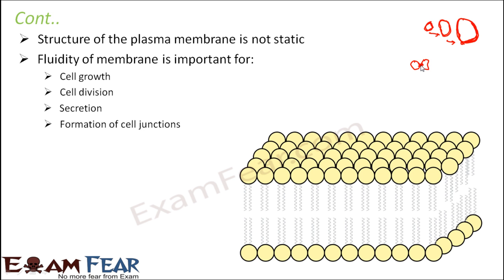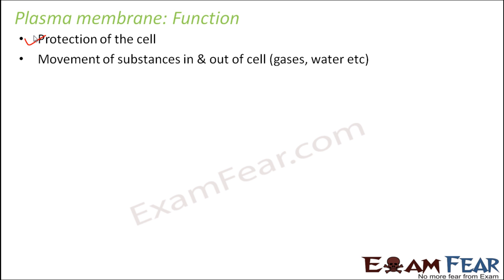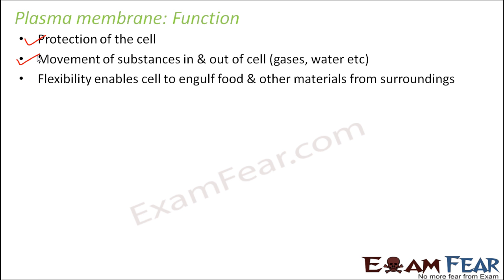Now that we have completely understood the semi-permeable behavior of plasma membrane as well as the structure, let us quickly look at the functions the plasma membrane performs. The first and foremost function is protection of the cell — this membrane, being the boundary, has to protect the cell. Movement of substances in and out of the cell: when I say substances, it can be gases by diffusion or water by osmosis, and this movement can also happen by active transport as well as passive transport. Flexibility enables the cell to engulf food and other materials from surroundings — since the membrane is quite flexible and can move, movement of the membrane also helps to engulf food.